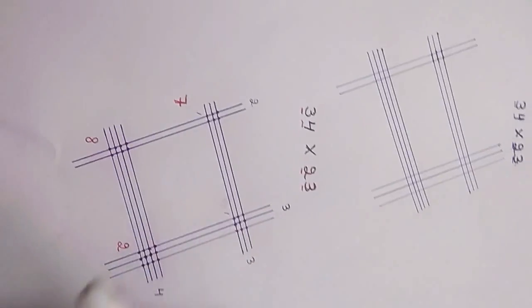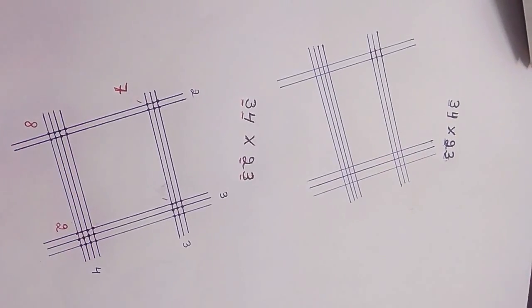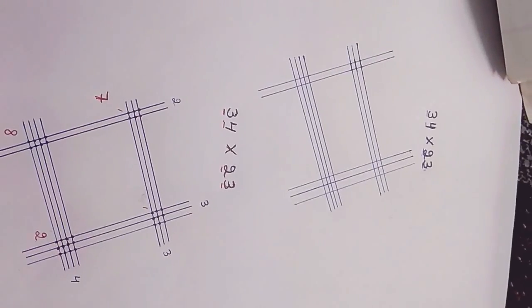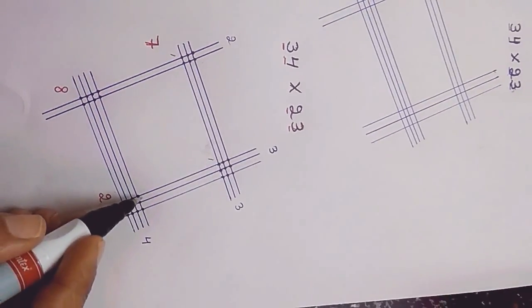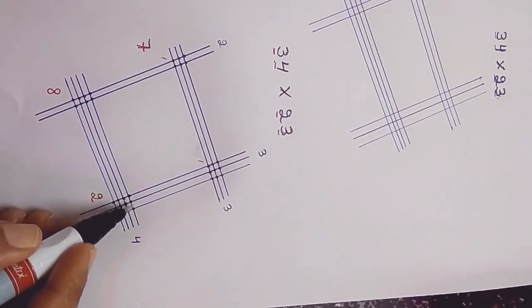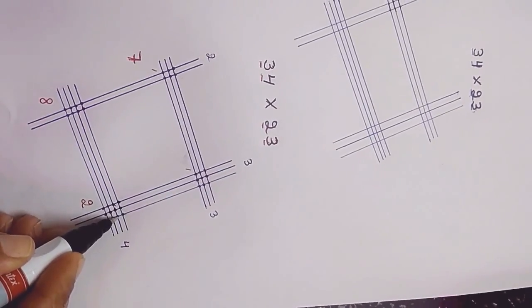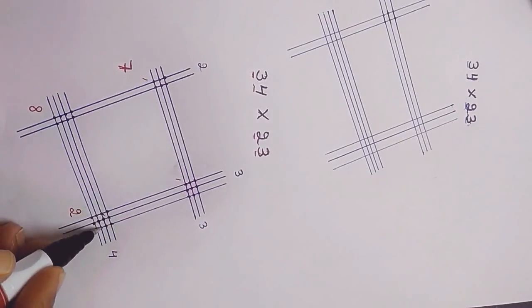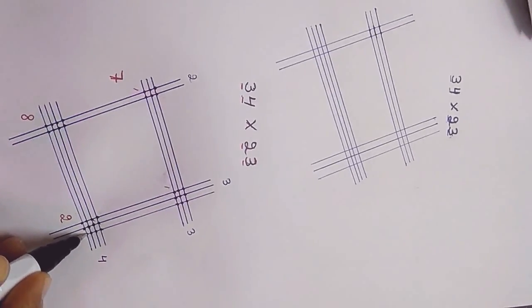Now group these intersections that are vertically aligned and count the number of intersections in each group. So in that case we have intersection 1, 2, 3, 4, 5, 6. There is 12.